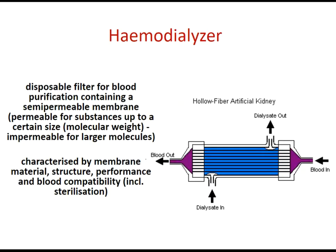The device for dialysis is the hemodialyzer, a disposable filter for blood purification containing a semi-permeable dialysis membrane. It is permeable for substances up to a certain molecular weight, and impermeable for larger molecules like albumin. It is characterized by membrane material — nowadays all synthetic — the structure, and the performance: either low-flux or high-flux membrane. Blood compatibility and sterilization type are also key characteristics.